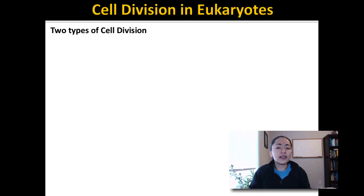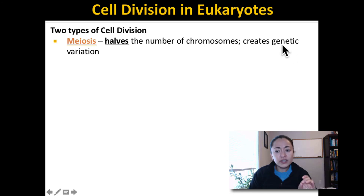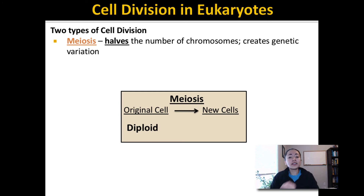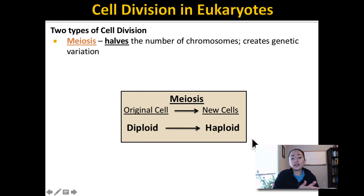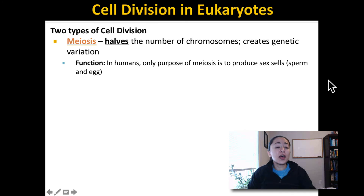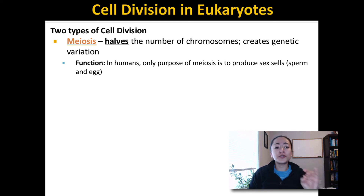Now let's talk about meiosis. Meiosis differs from mitosis because it creates new cells that are genetically different from the original cell, and it also halves the number of chromosomes. Meiosis always begins with a diploid cell. If that diploid cell undergoes meiosis, the new cells must be haploid because they have half the genetic information of the original cell. As you can see, meiosis takes a cell with two sets of chromosomes and creates new cells that only have one set of chromosomes, and that is a major reason it differs from mitosis. In humans, the only purpose of meiosis is to produce our sex cells.